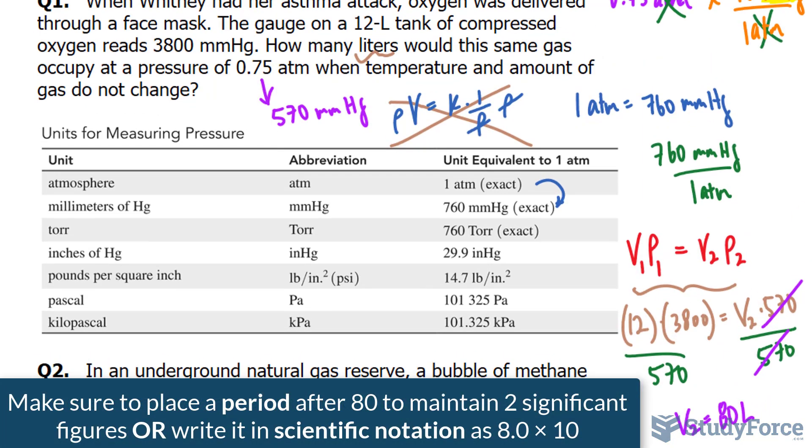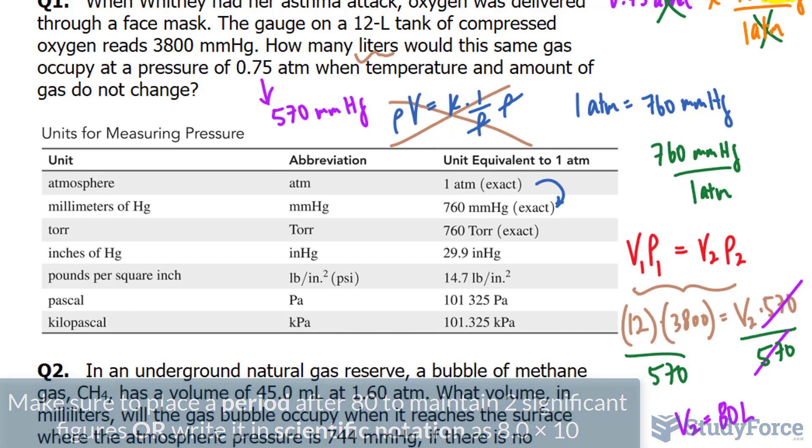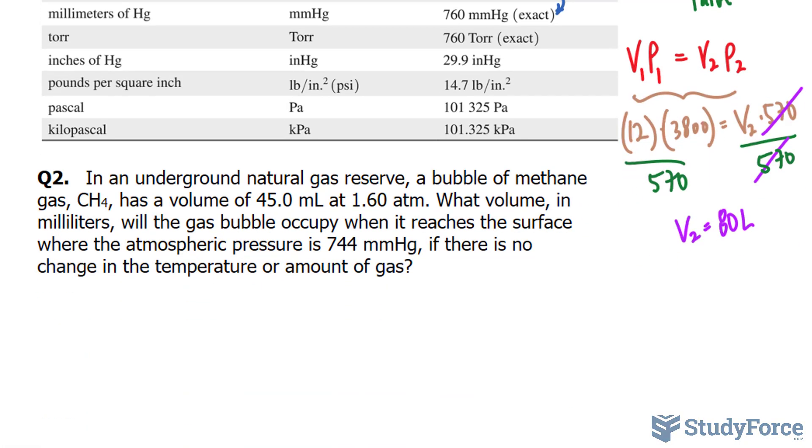So to sum up, at a pressure of 0.75 atmosphere, it would need 80 liters to occupy the same amount of gas when the temperature and the amount of gas stays the same. Let's move on to question number 2.